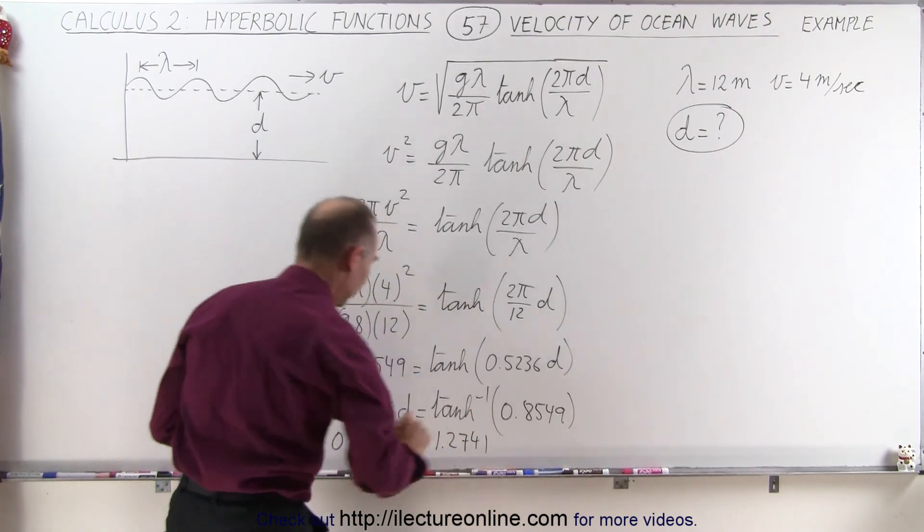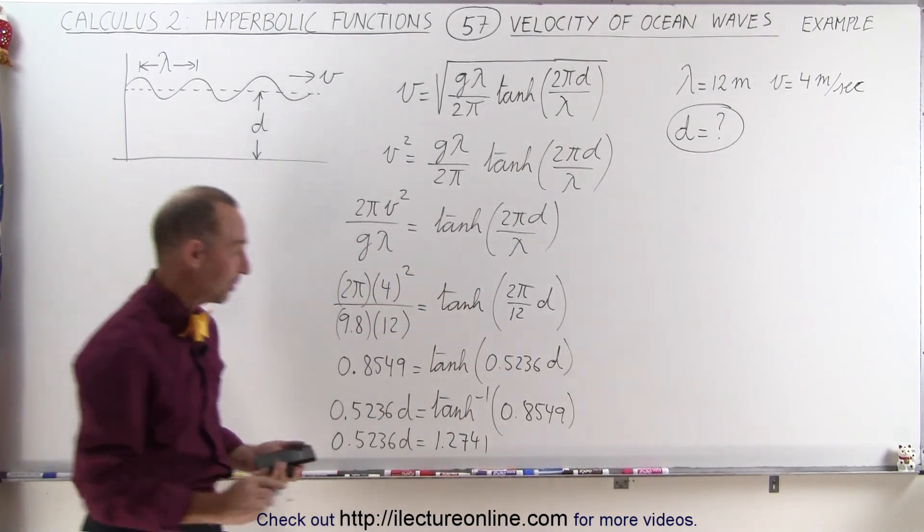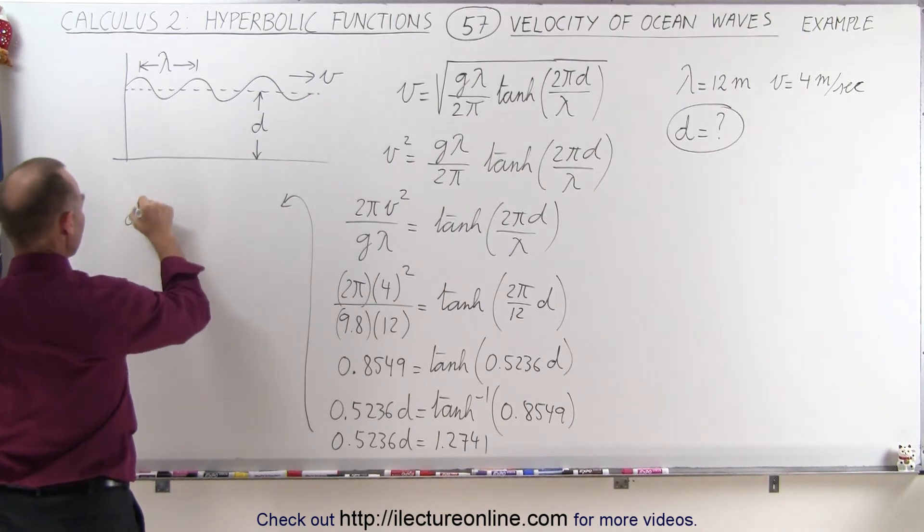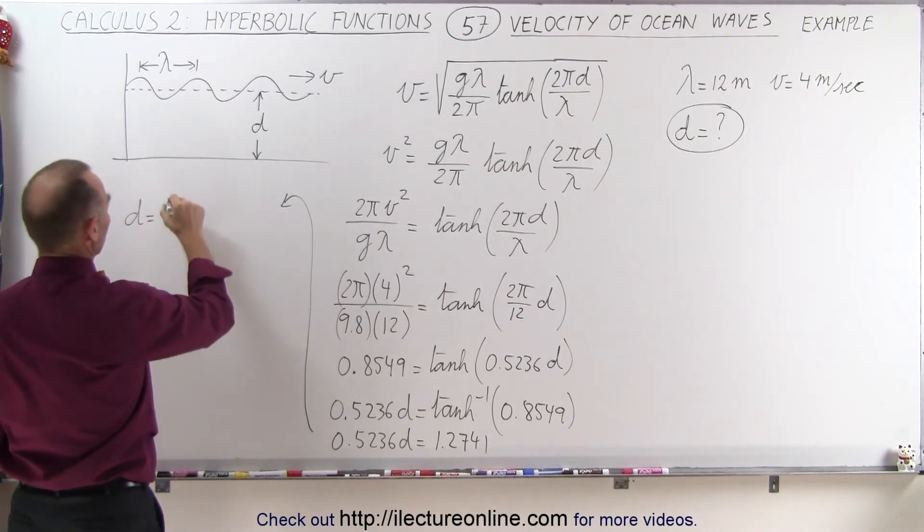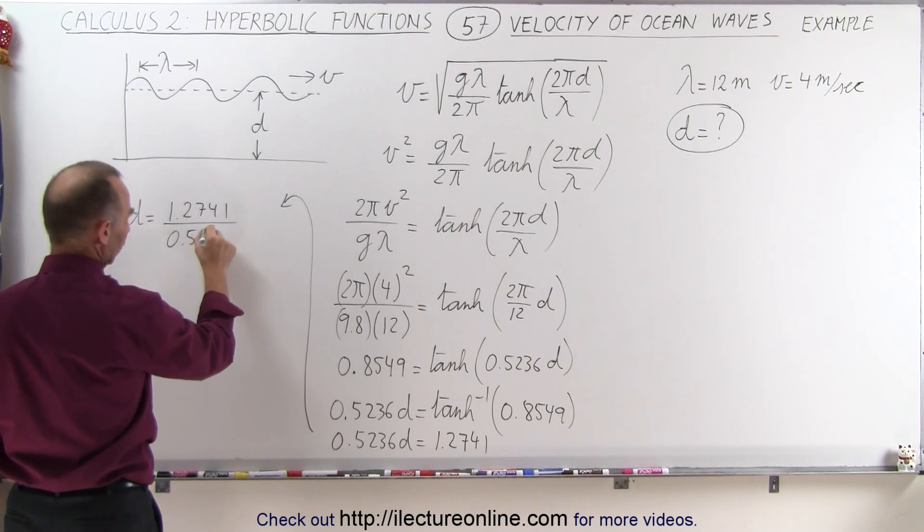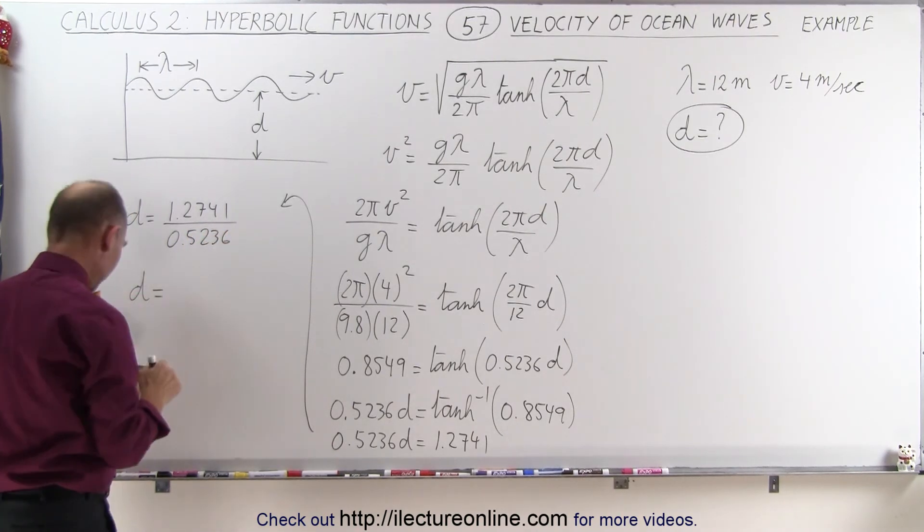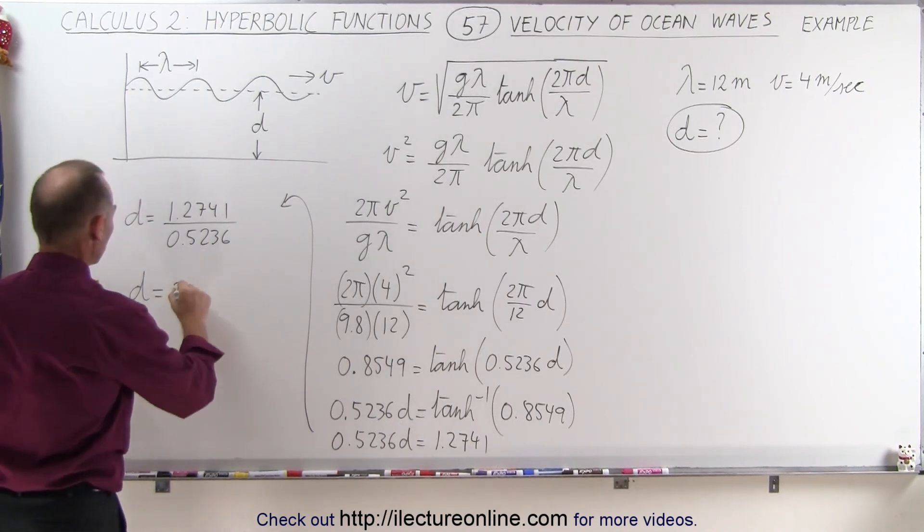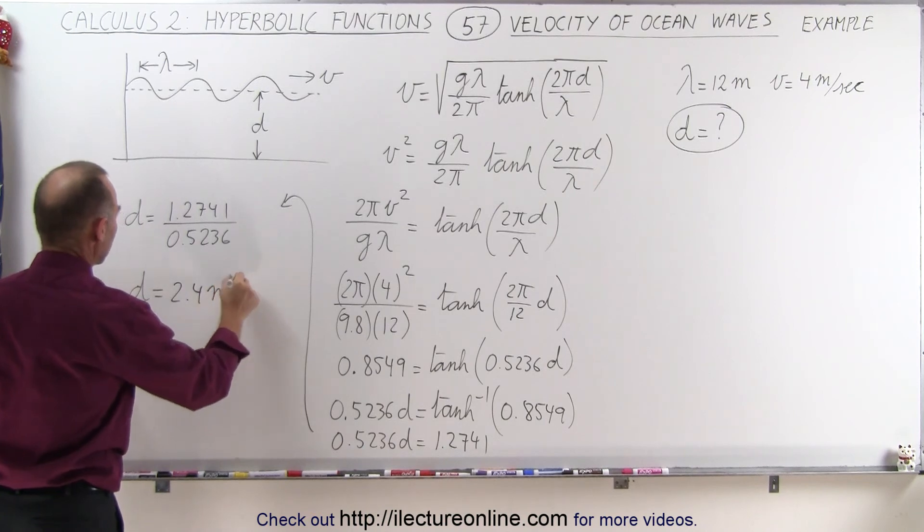1.2741. And so finally we can solve for d. Let me bring it over here. So now we can say that d is equal to 1.2741 divided by 0.5236, and so d is equal to about 2.4 meters.